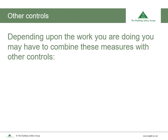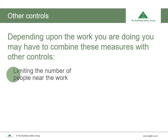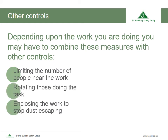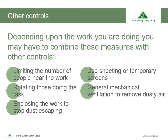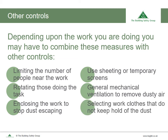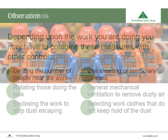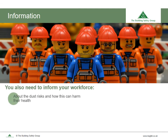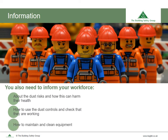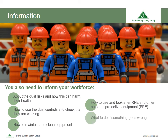Depending on the work being carried out, you may need to combine these measures with other controls — such as limiting the number of people near the work, rotating those doing the task, enclosing the work to stop dust escaping, using sheeting or temporary screens, general mechanical ventilation to remove dusty air from the work area (particularly in enclosed spaces indoors), and selecting work clothes that do not retain dust, such as avoiding woollen and open-weave garments. You also need to inform your workforce about dust risks, how to use and check dust controls, how to maintain and clean equipment, how to use and look after RPE and other PPE, and what to do if something goes wrong.